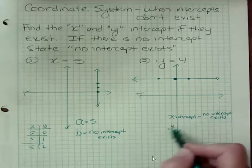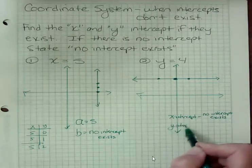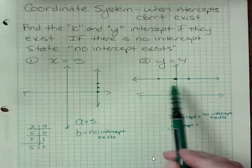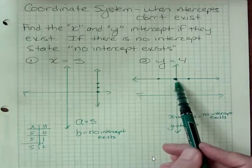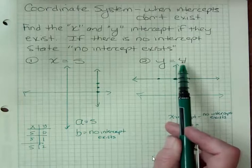What about the y intercept? Where does this line cross the y axis? Well, it crosses the y axis at 4. Of course it does, because y is always 4, so it's going to have a y intercept of 4.